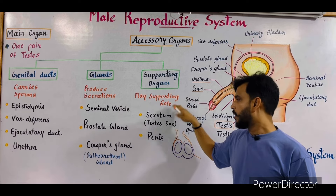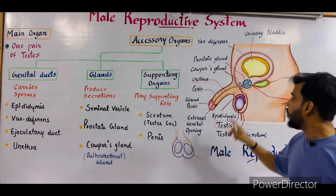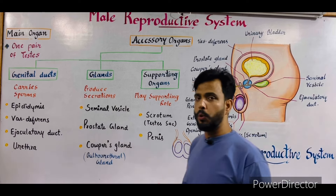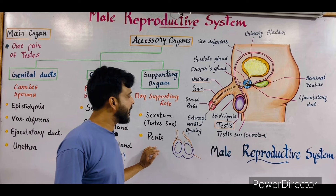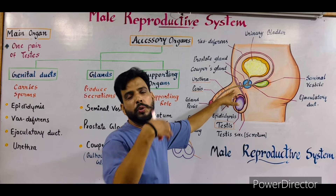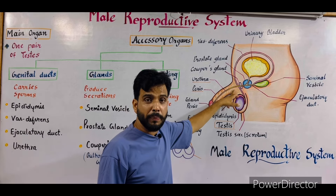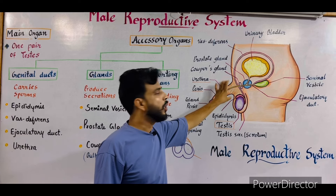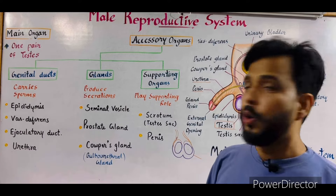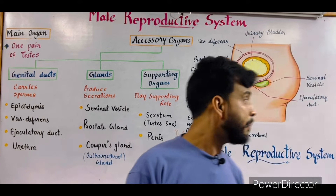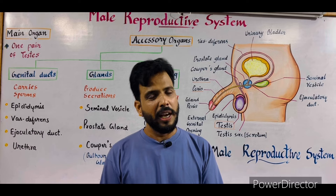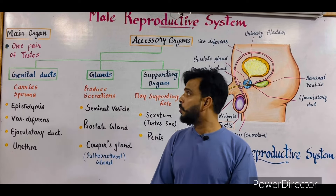The last category is supporting organs, which play a supporting role. Number one is the scrotum or testis sac — since the testes are present outside the body, the scrotum provides support to the testes. Number two is the penis, an erectile organ that helps carry and release sperm inside the vagina of the female and assists in sexual intercourse. That was all about the male reproductive system. If you have any questions, please ask in the comment section.